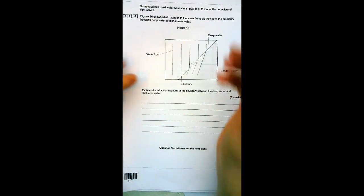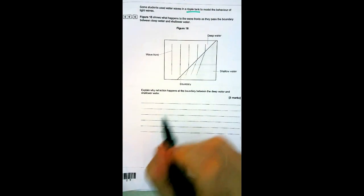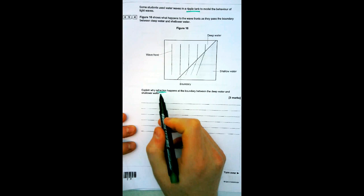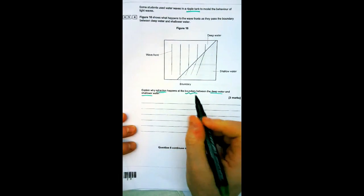This question is in the context of a ripple tank and asks about refraction. It could apply to light waves or anything, but let's dive into it. The question asks: explain why refraction happens at the boundary between deep and shallow water.